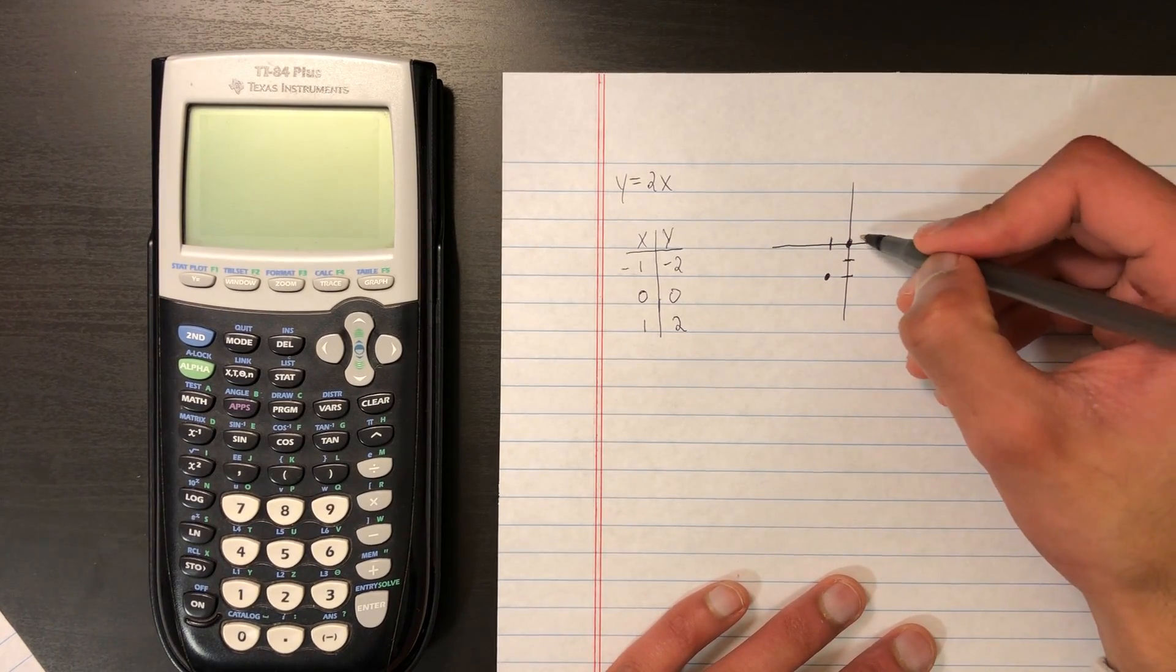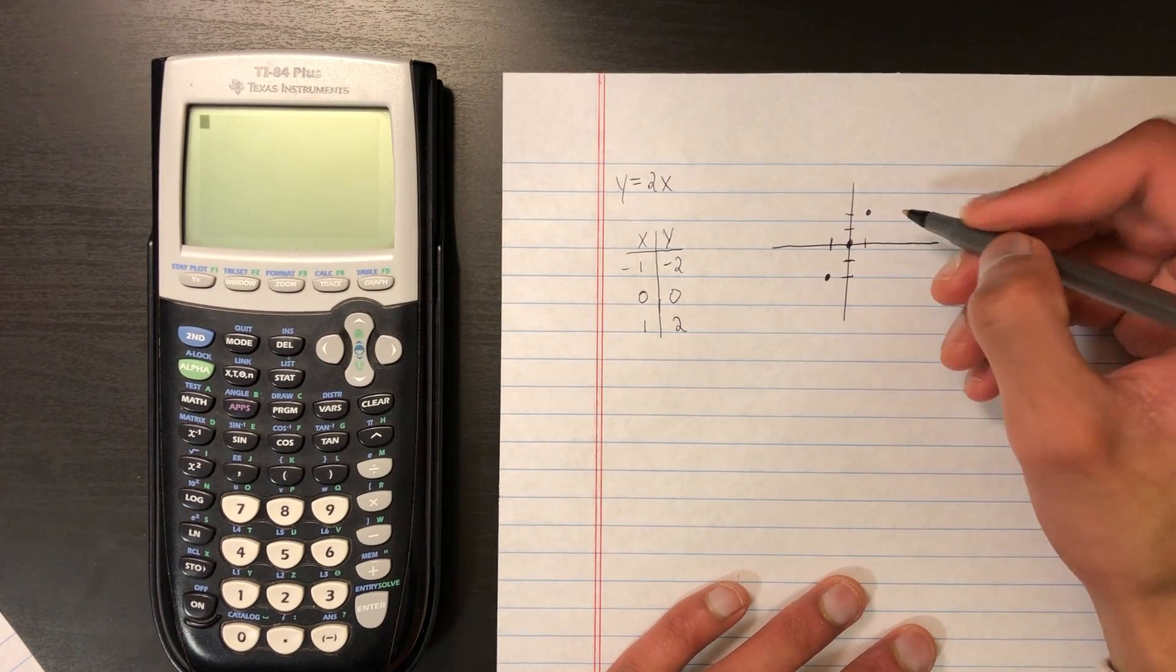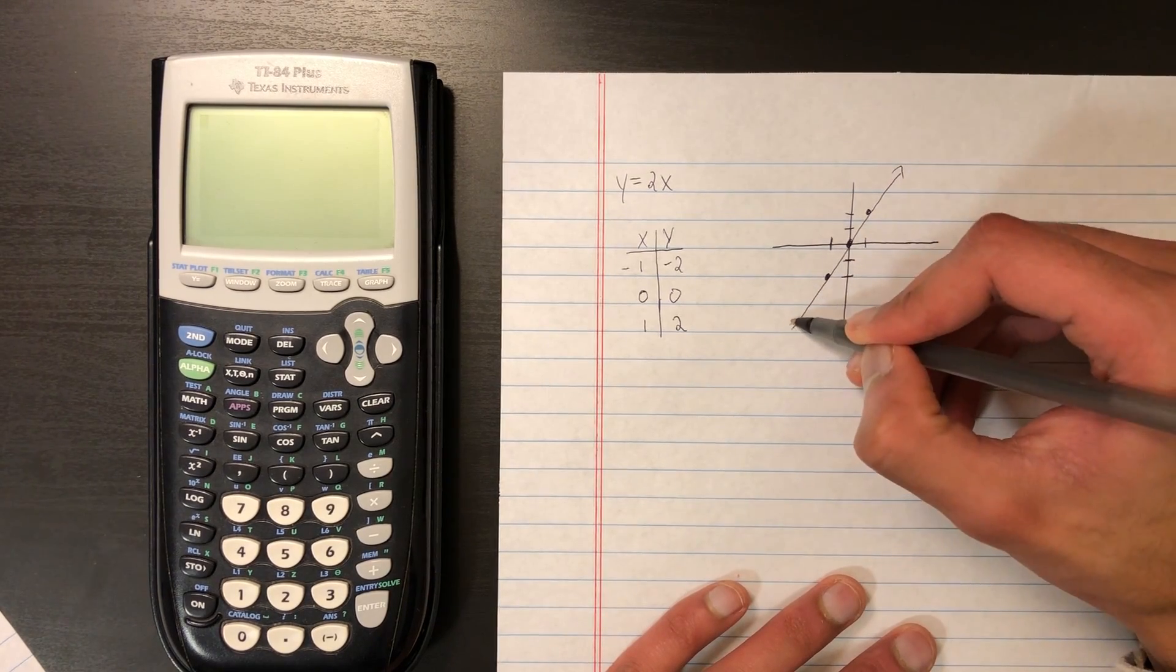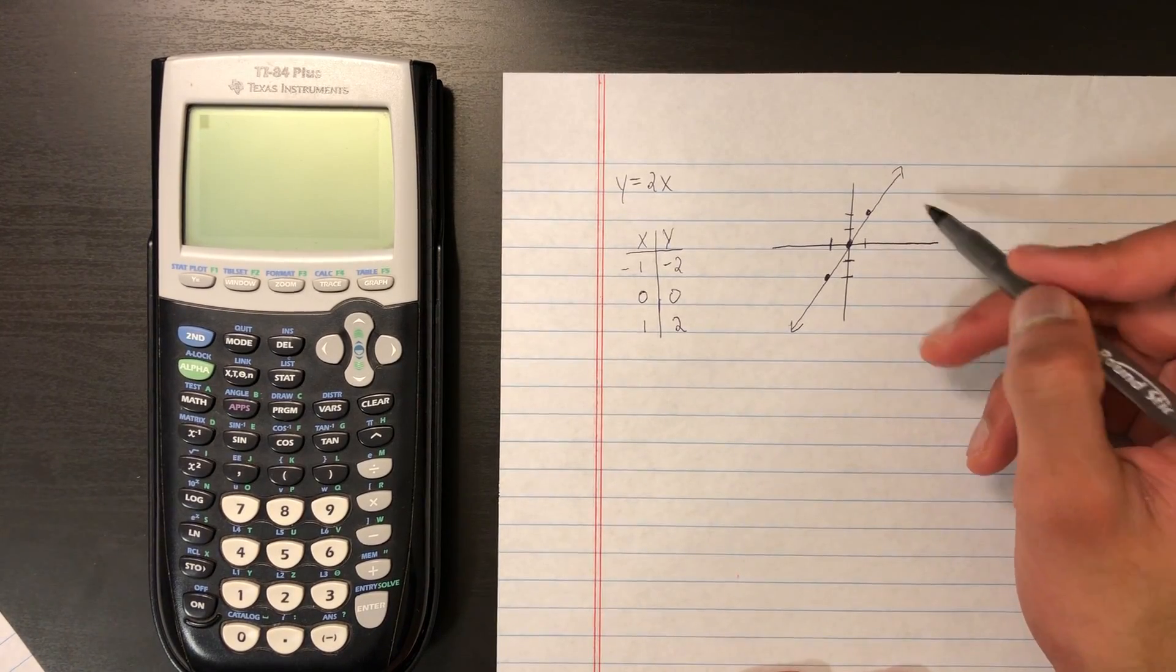And then the last point, 1, 2. And then all we need to do is connect the dots. This is the linear graph of y equals 2x.